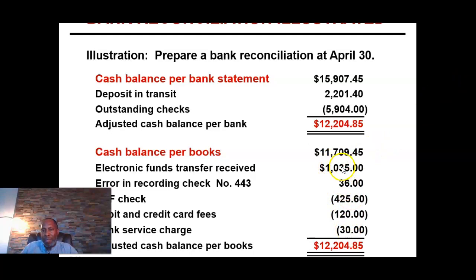Any adjustments made to the balance per books require you to make a journal entry that will then post into the cash ledger account. Right now we're showing our cash ledger at $11,709.45, but we're saying that amount should be $12,204.85. It will reflect that amount after we journalize these adjustments and then post them to the cash ledger account.